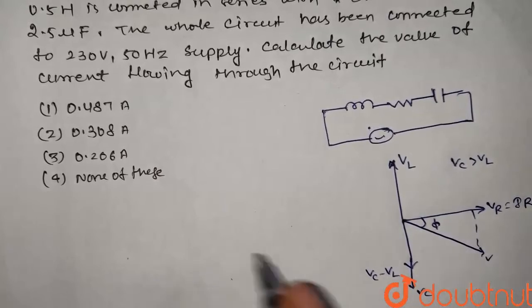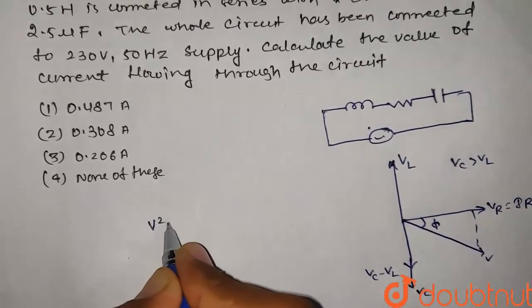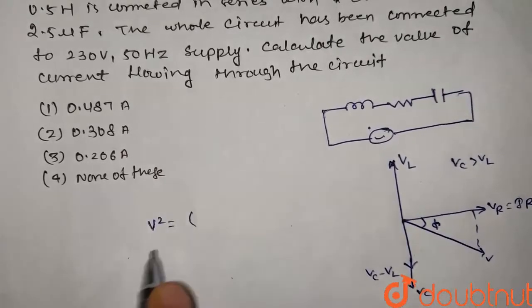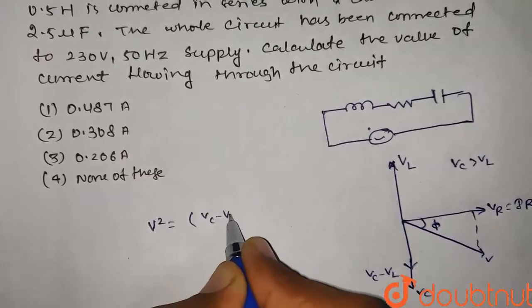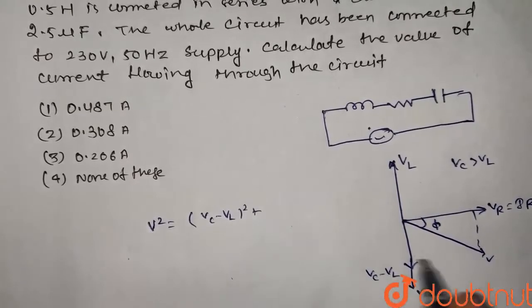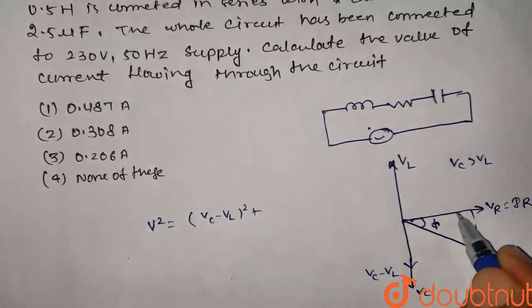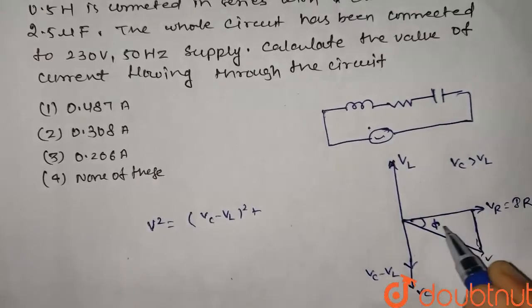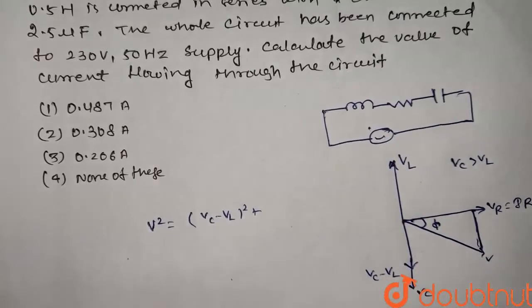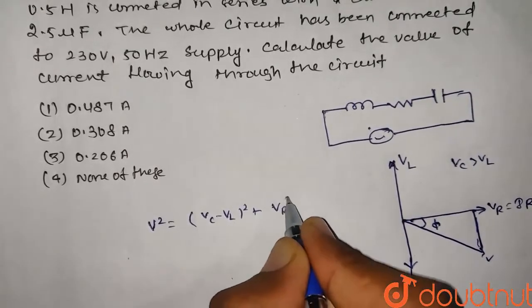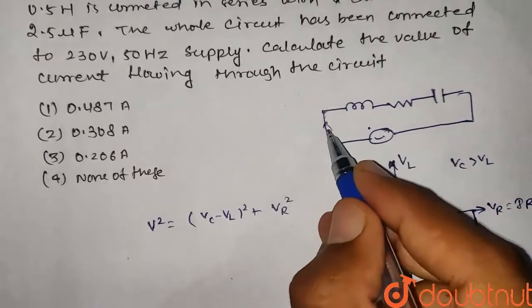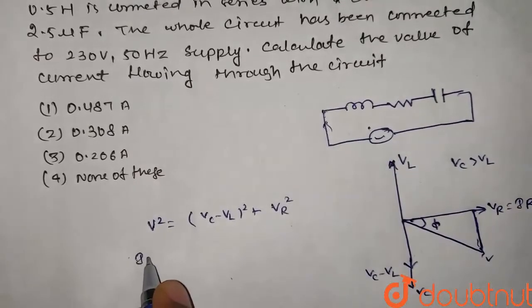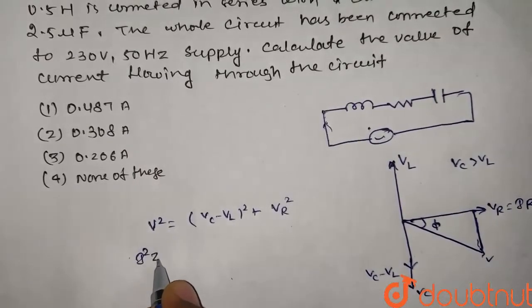V resultant: V squared is equal to VC minus VL squared plus VR squared. This is a right angle triangle, so VR squared.